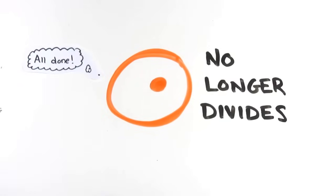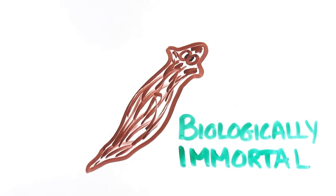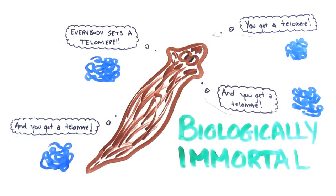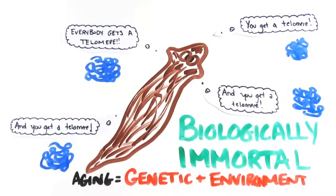Some flatworms are able to endlessly regenerate their telomeres, making them effectively biologically immortal. But their lifespans do vary and they're still susceptible to disease, further suggesting that aging is a mix of genetic and environmental factors.